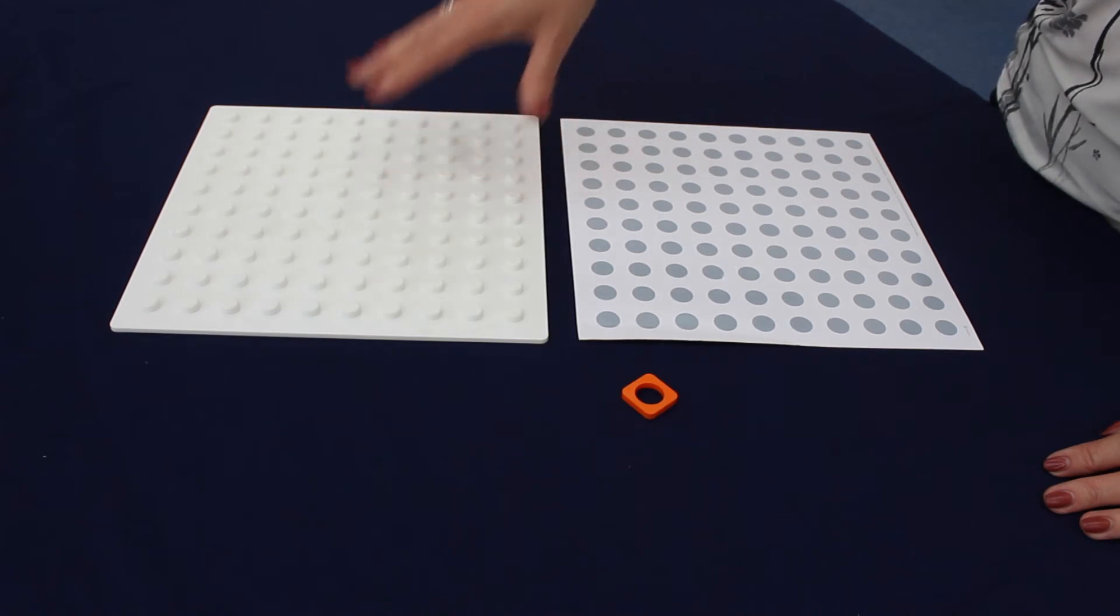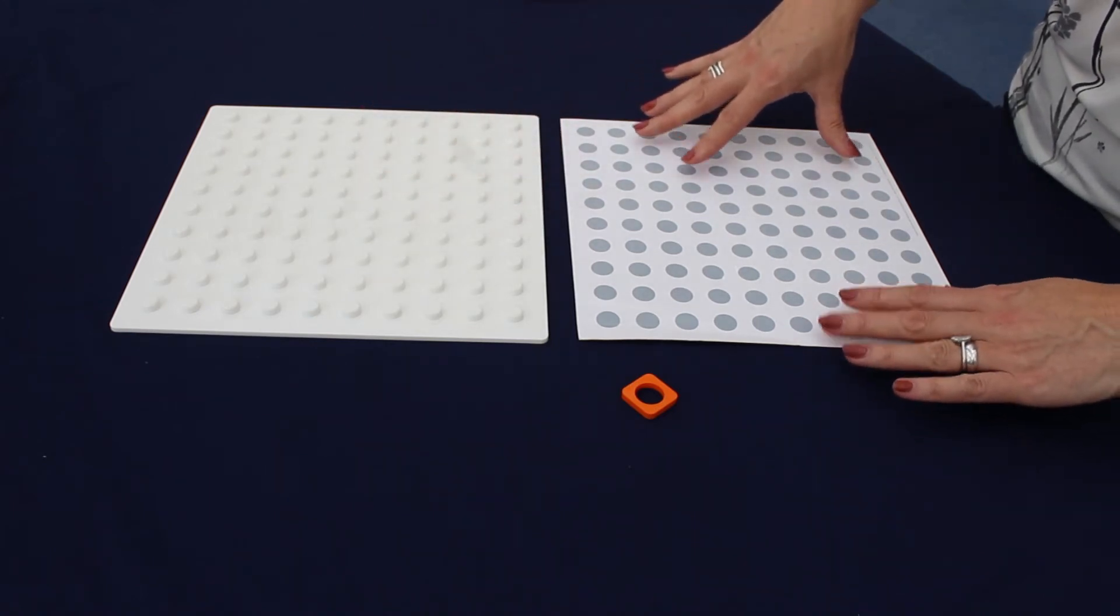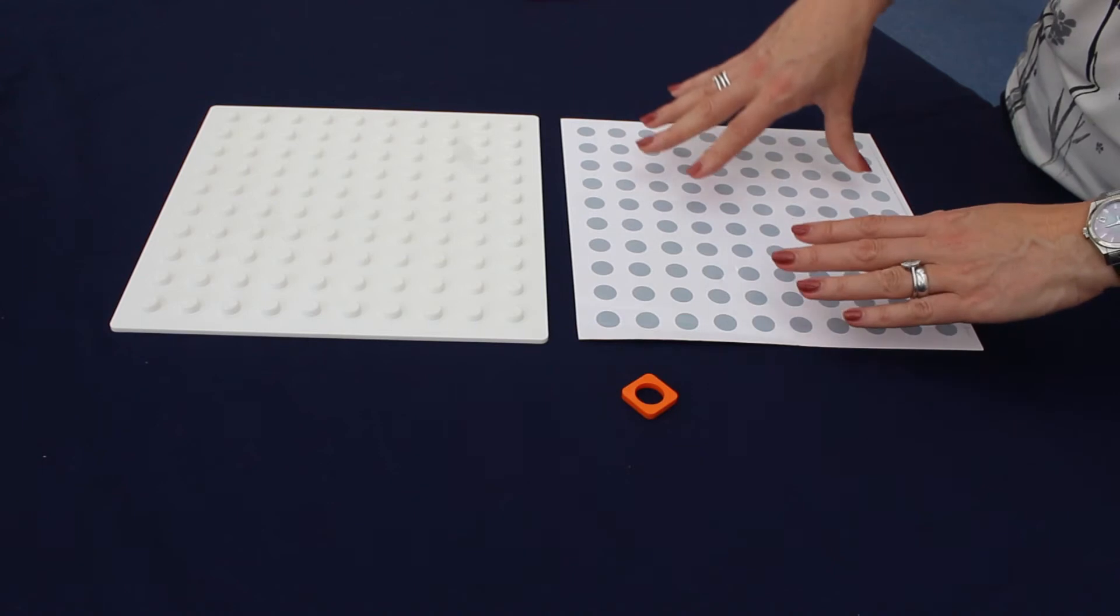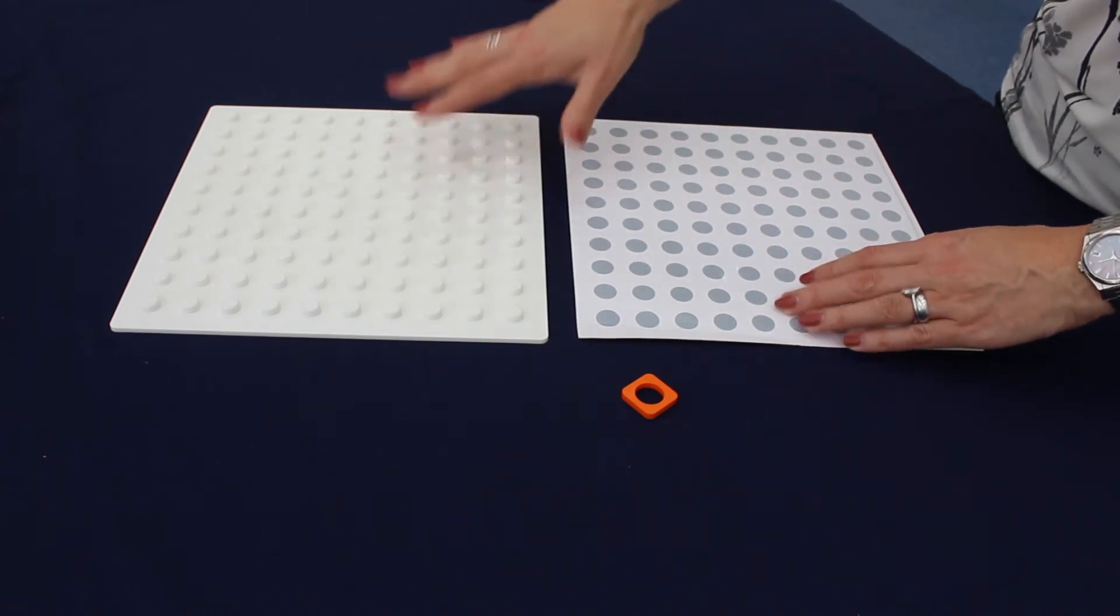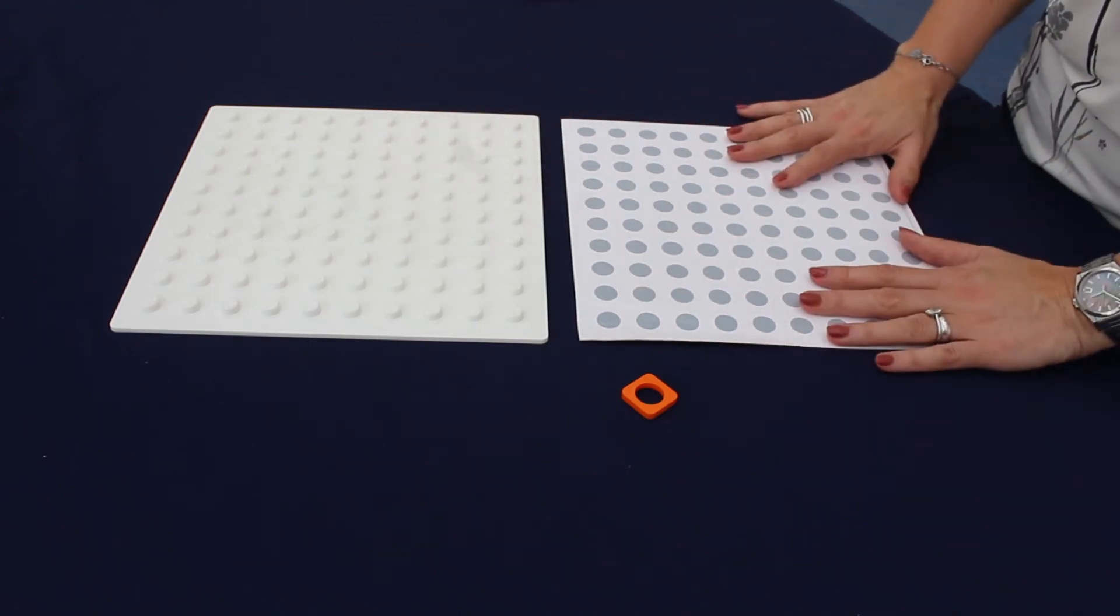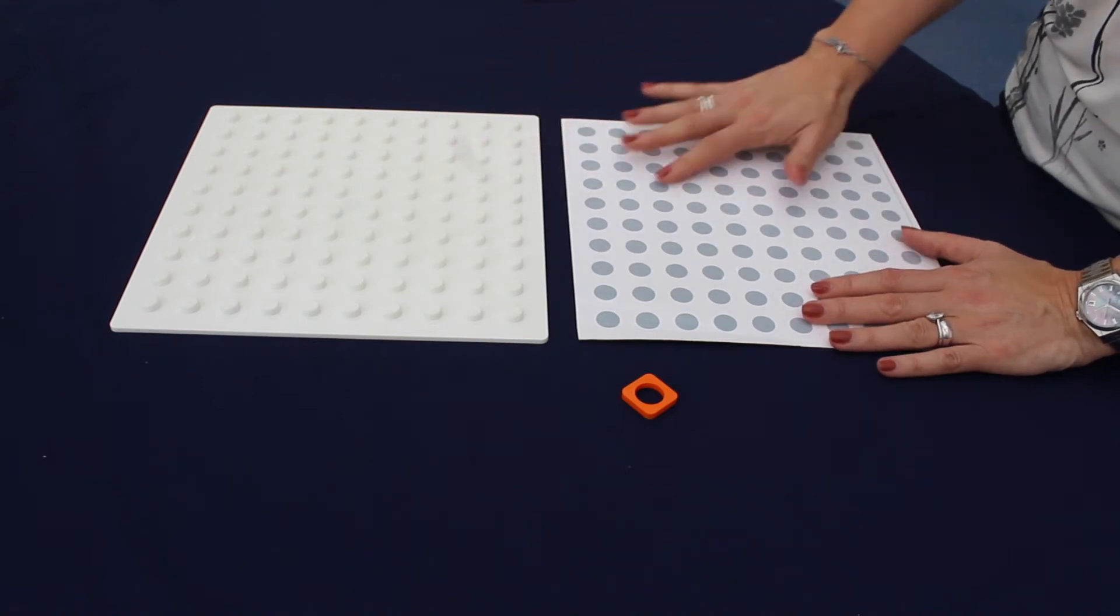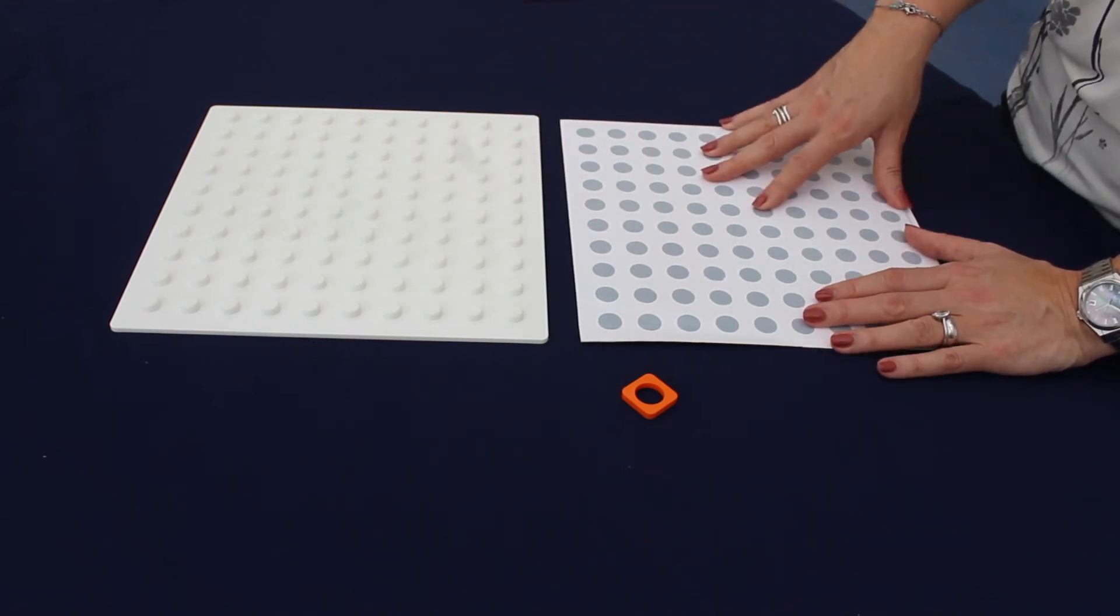Then in middle and upper key stage one we introduce the baseboard laminates which is a pictorial representation of the baseboard. Exactly the same activities on here, but you're just moving into a more two-dimensional way of working.